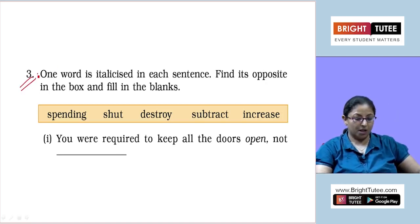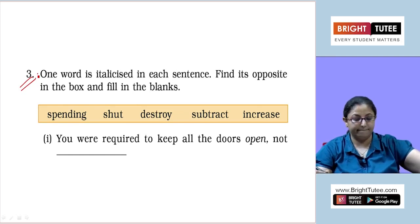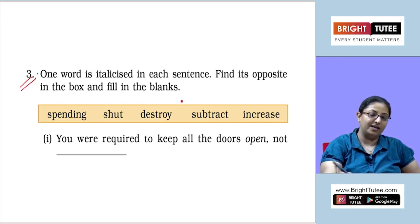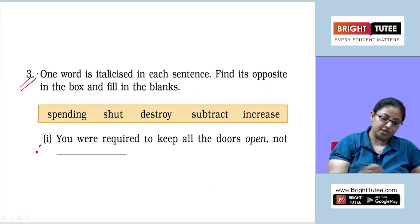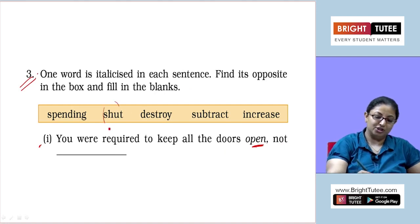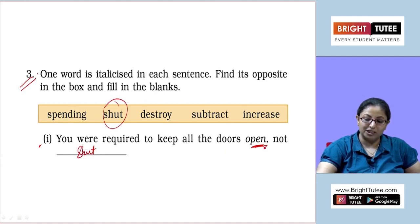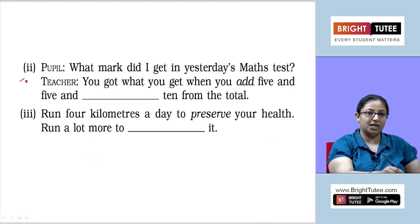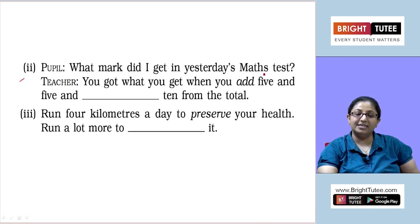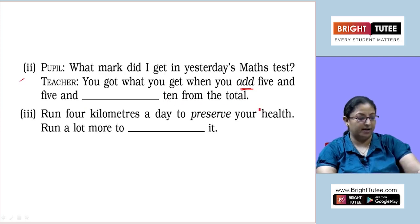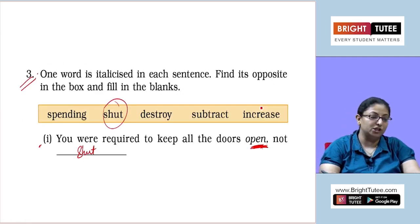Question number three: one word is italicized in each sentence — find its opposite from the box and fill in the blank. First: you were required to keep all the doors open, not ___. The italicized word is 'open,' so the answer is 'shut.' Second: pupil asks what mark in maths test; teacher says you get what you get when you add five and ___ ten from the total. Opposite of 'add' is 'subtract.'